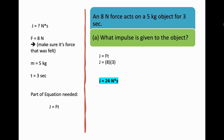Let's look at problem A — what impulse is given to the object? We're solving for impulse, J. The units are newtons times seconds. The force felt on the object was 8 newtons, the mass is 5 kilograms, and the duration was 3 seconds. The part of equation 19 we need is simply J equals FT. Substituting: J equals 8 times 3. So J equals 24 newton-seconds — pretty straightforward.